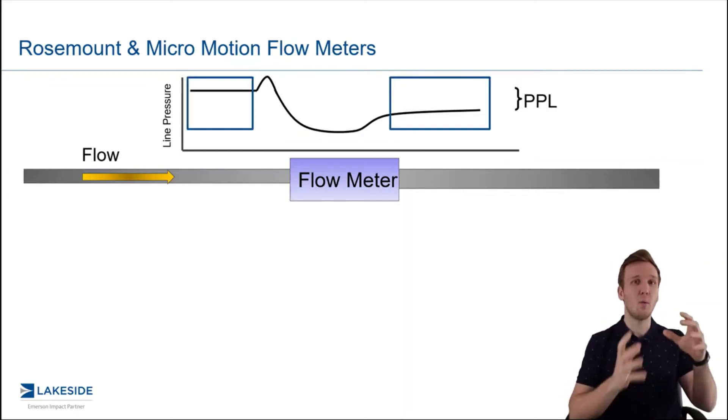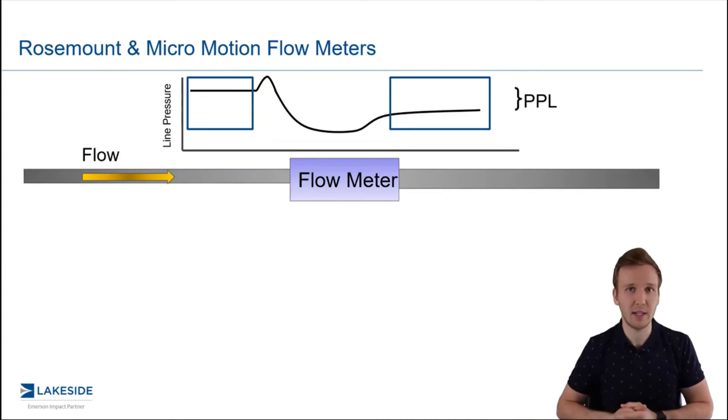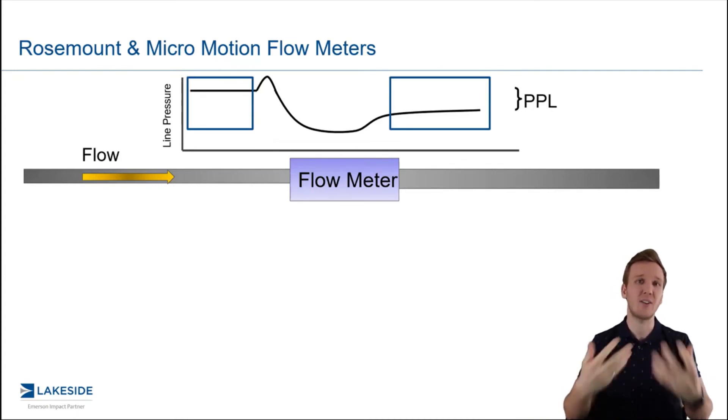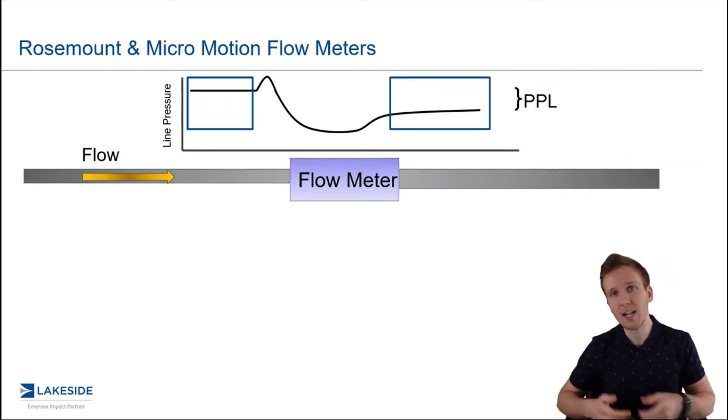Permanent pressure loss is going to be way before and way after that flow meter. And what that is going to be is the permanent effect that this flow meter has had on your system. So you got to imagine the product traveling through, it has some sort of friction or obstruction, and that's going to have a lasting effect.